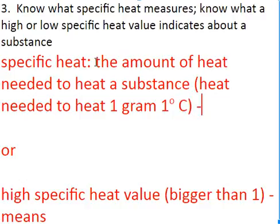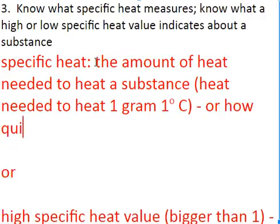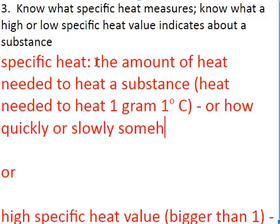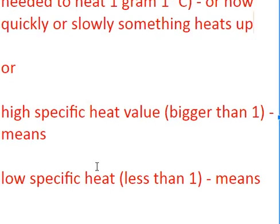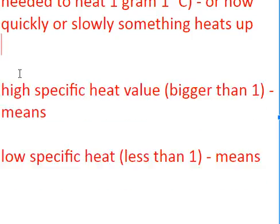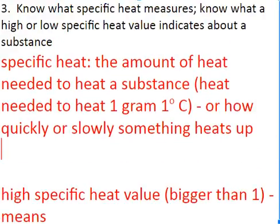Or an easier way to think of it, how quickly or slowly something heats up. And that's why it's referred to as specific heat capacity, abbreviated C. Something has a big capacity, it's slow to heat up or cool down. And if something's got a low specific heat value, then it heats up and cools down quickly.